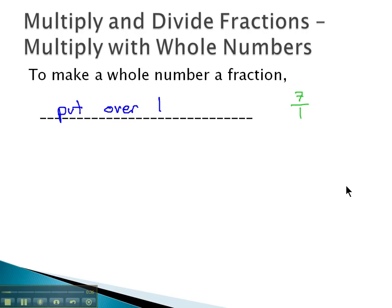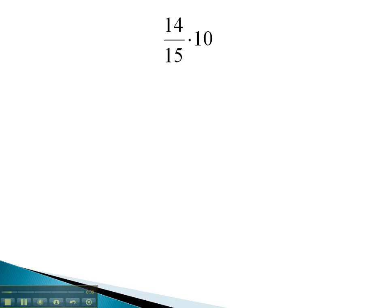Let's take a look at some examples where we do this. In this problem, we want 14 fifteenths of 10. We'll make the 10 a fraction by putting it over 1. This now makes the problem read 14 over 15 times 10 over 1.